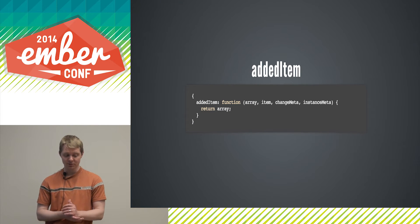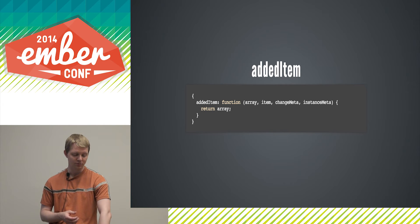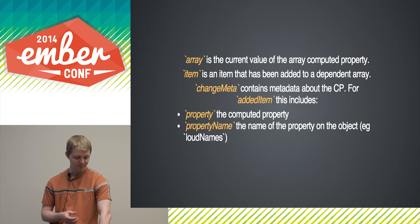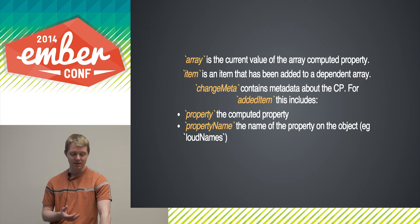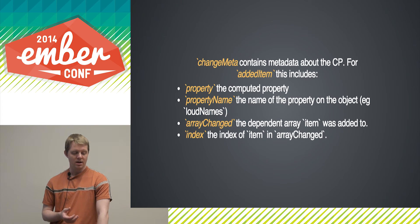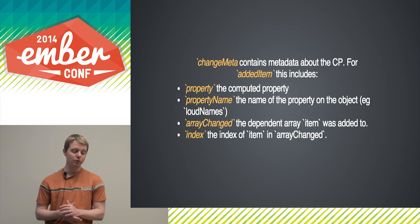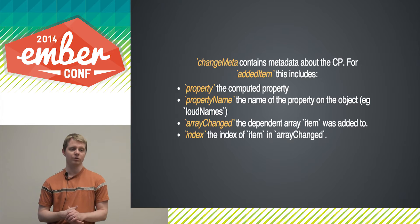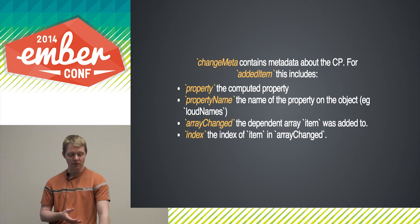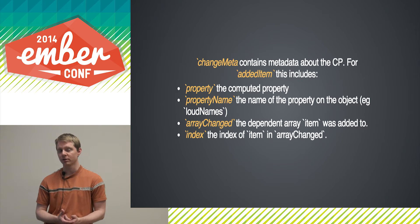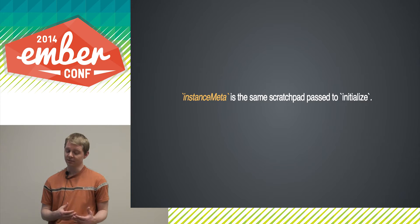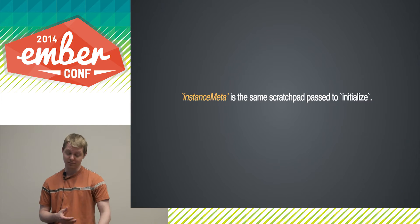addedItem looks similar. The main difference is that the signature also includes the item that was added. changeMeta includes the array that changed — which matters if you depend on multiple arrays — and the index of the item within that array, useful if your array computed needs to be order-preserving. For example, ember.computed.map is order-preserving, whereas ember.computed.sort obviously is not. instanceMeta is just the same scratchpad passed into initialize, shared between all callbacks.